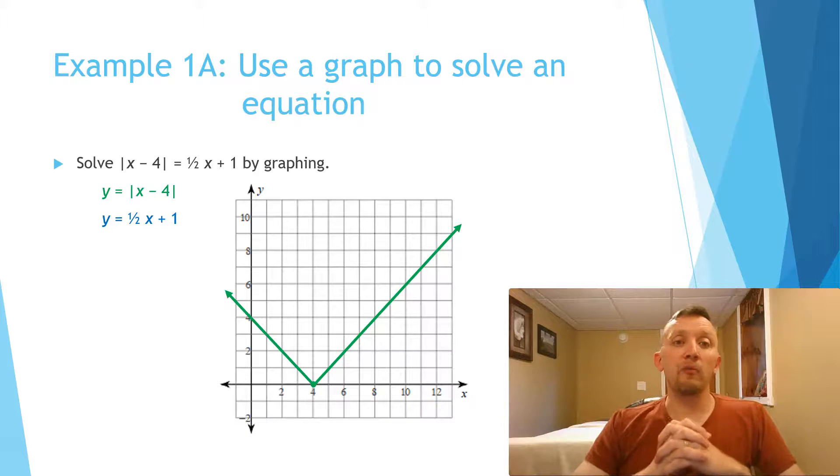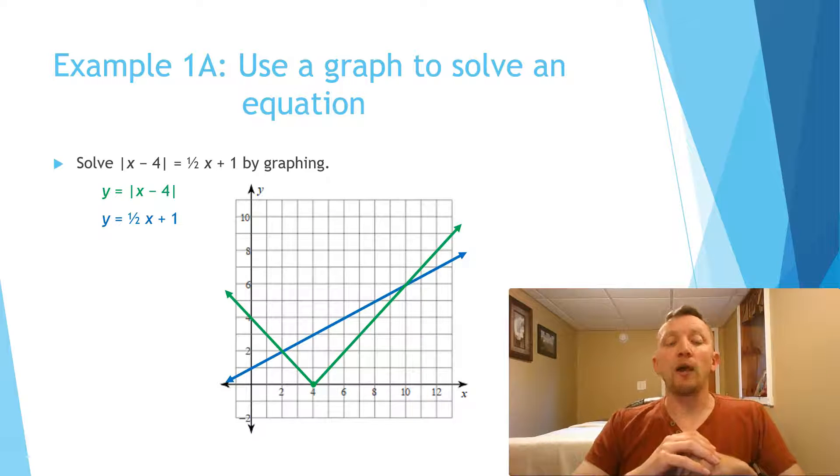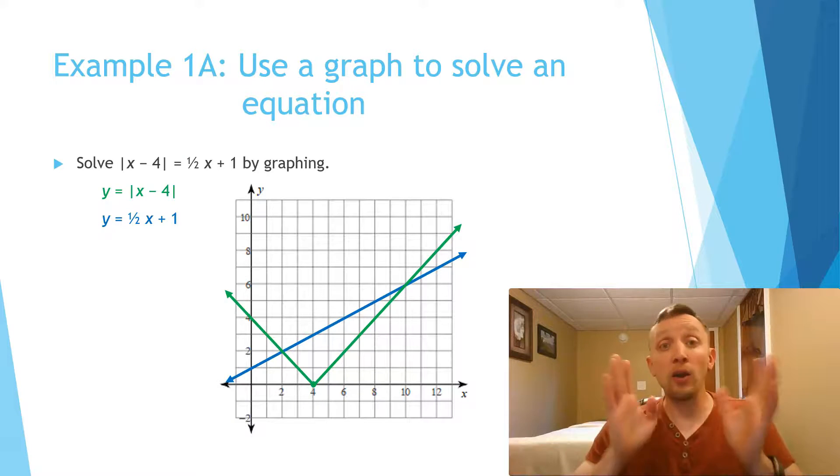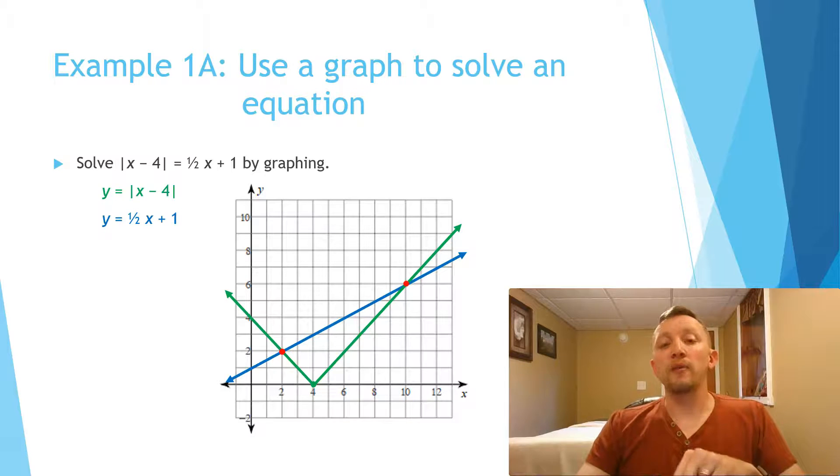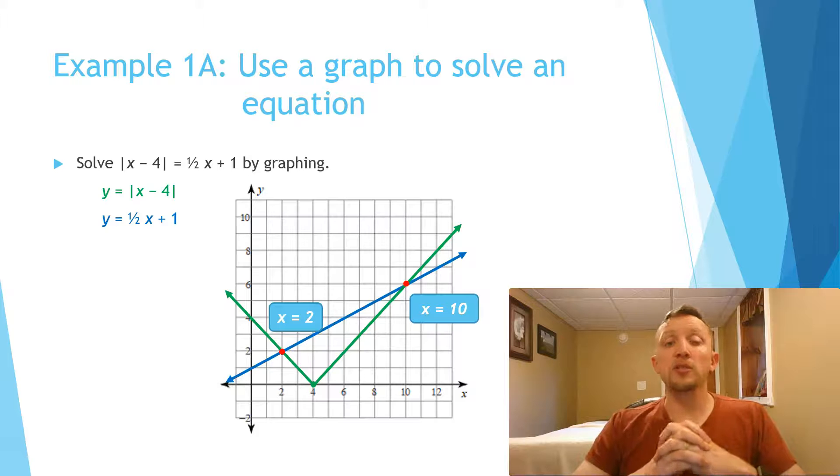The second graph has a y-intercept of 1 and a slope of 1/2. My grid here counts by 1s on both the x and y-axis, so we're going to have a y-intercept of 1, and then we would go up 1 over 2, up 1 over 2, up 1 over 2 to get the other points. Now you can see that these two graphs intersect at two different places, so that means there's two possible answers for x. We would have both x = 2 and x = 10. You can plug both of those into your original equation and find that both would make true statements.